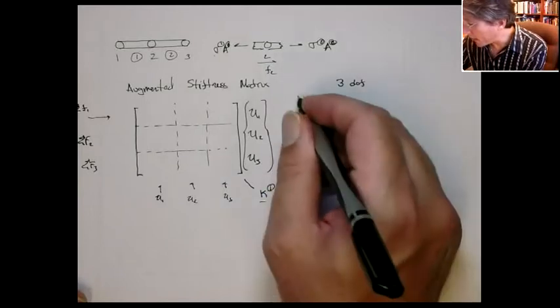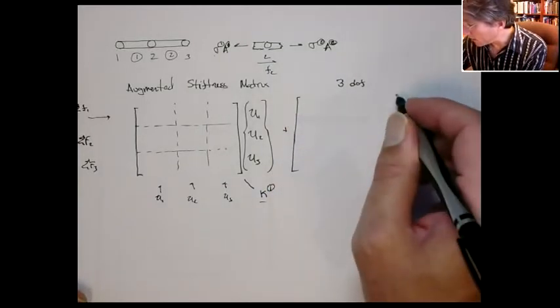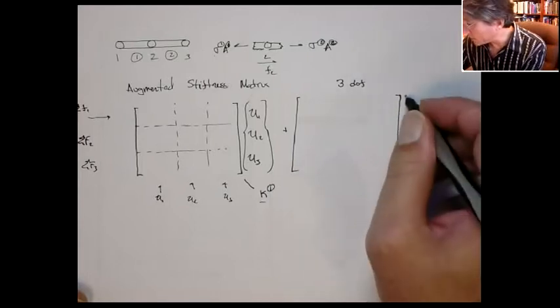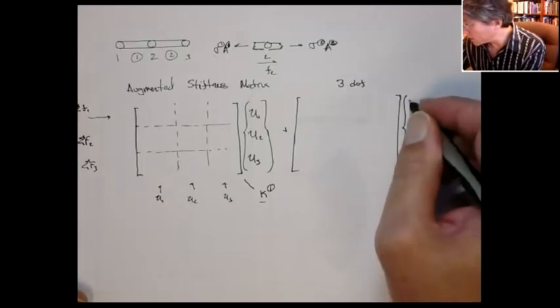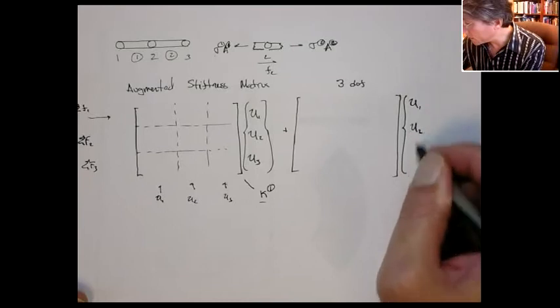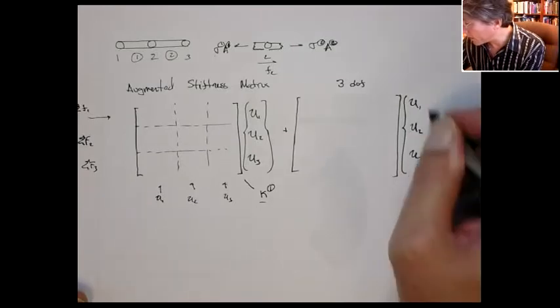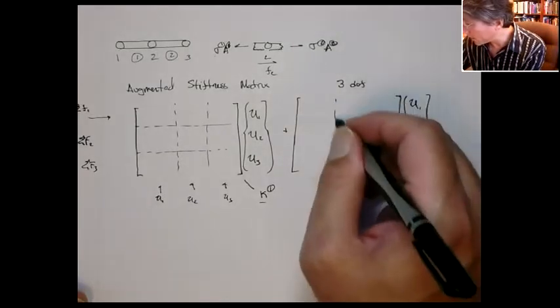And then I'm going to add on to it an augmented stiffness matrix for element 2. It's also going to get multiplied by the nodal unknowns. Here's the 3 by 3.